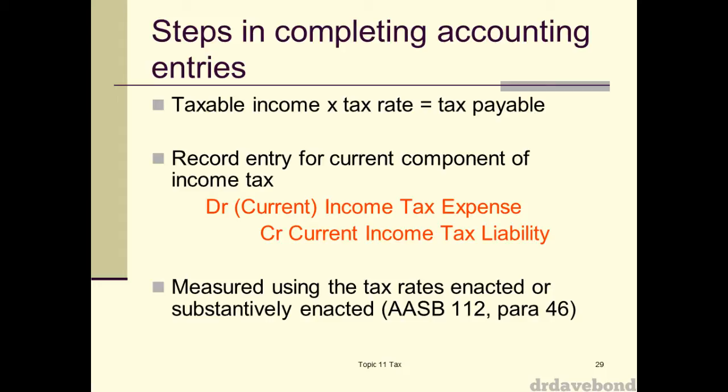Taxable income multiplied by the tax rate is your tax payable — this is in effect what you owe the government. We record that by debiting income tax expense and crediting current income tax liability, which is what we saw earlier with the four companies we looked at: that's their current tax liability you see in the current section of liabilities on the balance sheet.